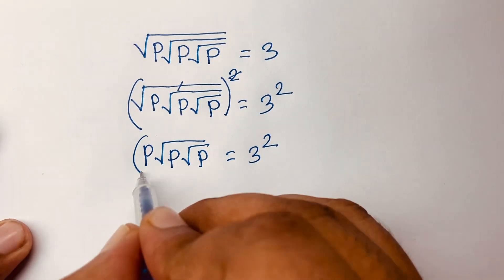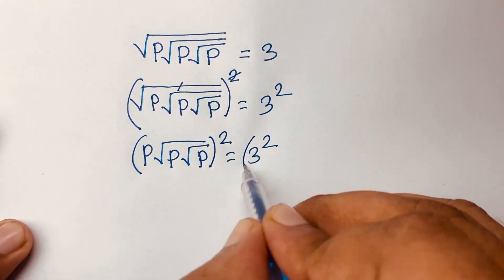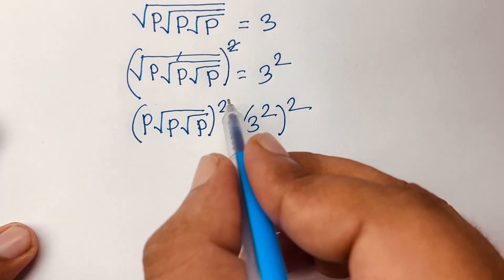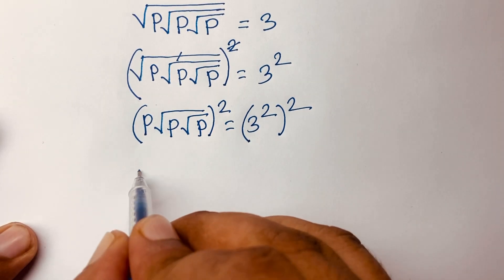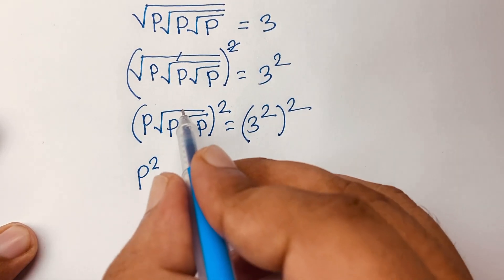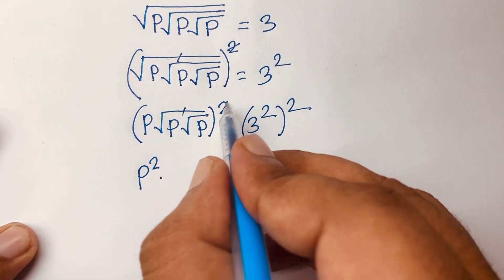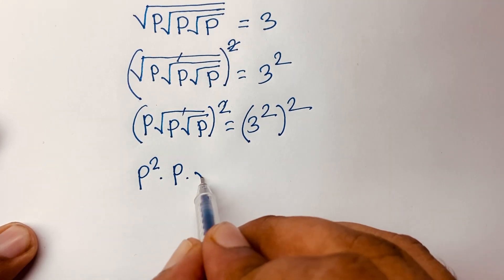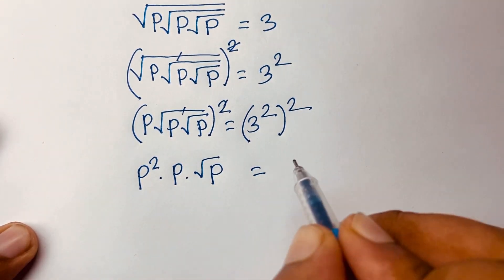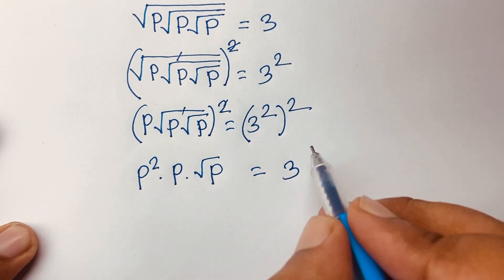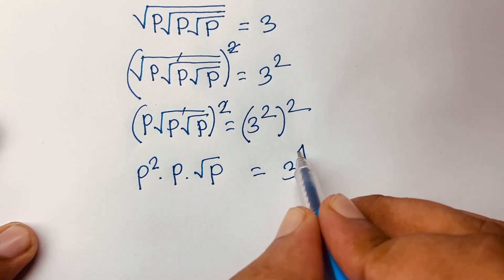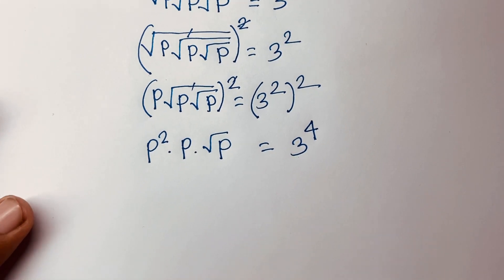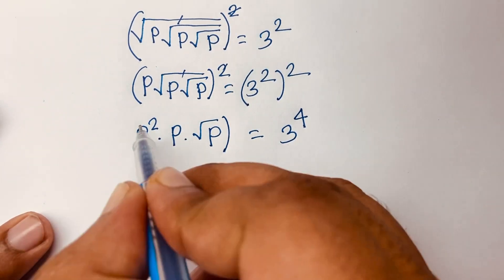Again, I square both sides. Here p squared times — the square root cancels — so we find p times square root p is equal to 3 to the power of 2 times 2, which is 4.